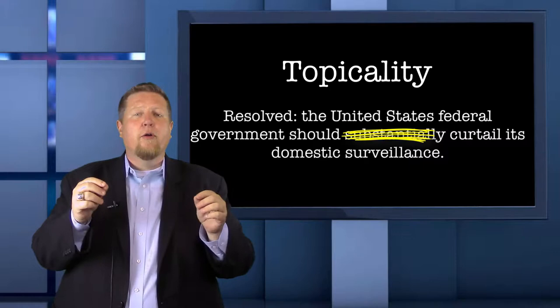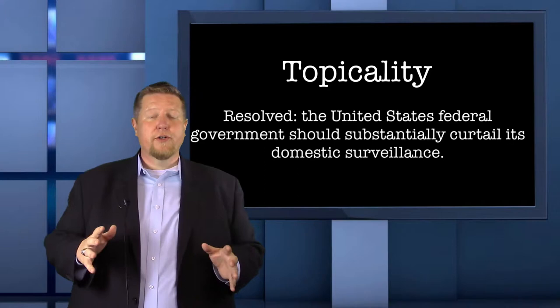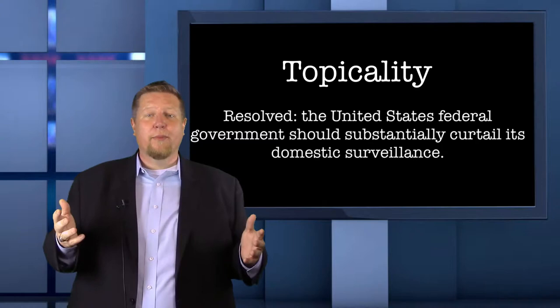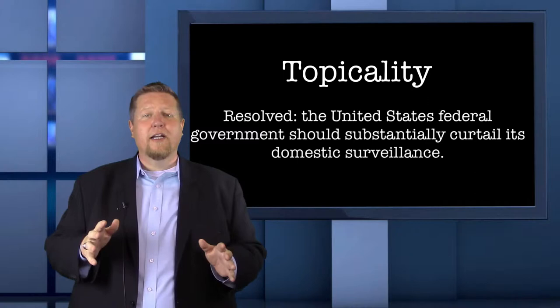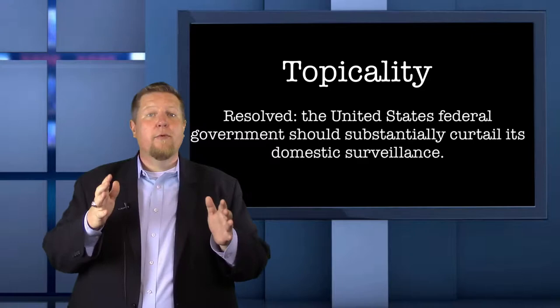If we took out the word 'substantially,' the affirmative team could propose much smaller cases that only slightly curtail the amount of surveillance. Some topicality violations are obvious — for example, if the affirmative plan was to increase surveillance, or if the plan required Japan to carry out the plan instead of the US federal government. Because these violations are so obvious, it's unlikely that you'll see this type of violation. Instead, most of the violations you'll see are with words that aren't clearly defined, words like substantially, curtail, and surveillance.